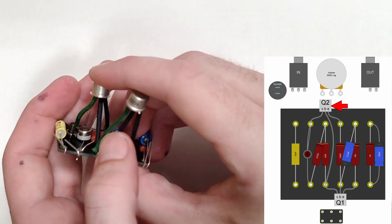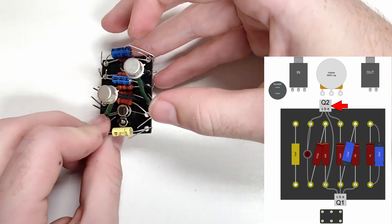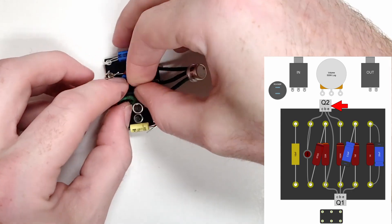This board is going to be installed in a 1590B, which is quite a small enclosure, so we'll bend the transistor flatter to ensure fit. We will do the same with Q1 after it has been soldered.